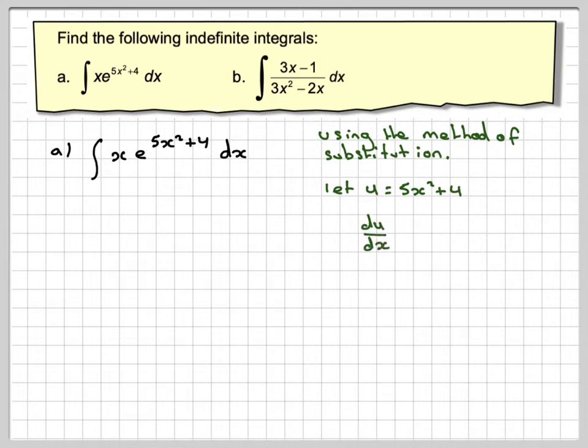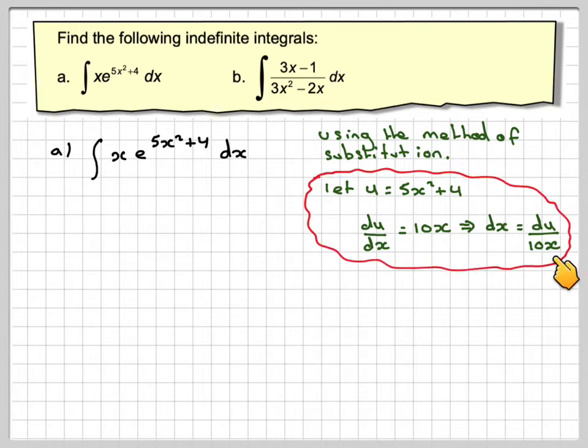we're just going to get 10x. And we'll let dx be the subject. So dx will be equal to du over 10x. Now when we put in that x, that x will cancel out. We've just got du over 10.